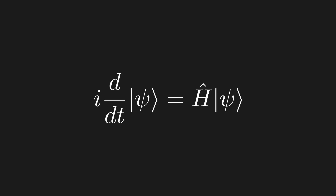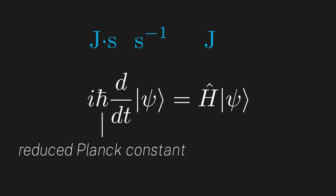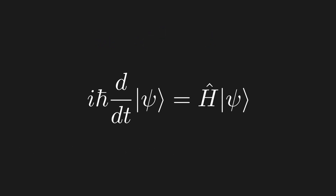Now there's one last thing we have to do — this is physics, so we need to be careful with units. On the left, the time derivative gives units of inverse seconds; on the right, the Hamiltonian gives units of energy, or joules. These clearly don't match, so we need to introduce a constant. Adding a constant to the left-hand side requires units of energy times seconds, or joule-seconds, to cancel the inverse seconds. We add a constant with those units — which we call the reduced Planck constant, whose value must be determined through experiment — and there it is: the Schrödinger equation.